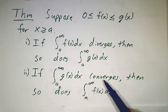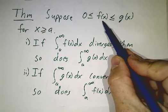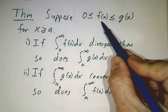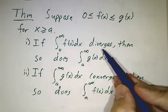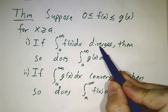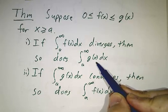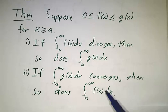By comparing two things — we like to think of smaller as being better, because the smaller the function is, the smaller the integral, and the more likely it is to converge. So if the little guy diverges, then the big guy diverges. And if the big guy converges, then the little guy is even better and it also converges.